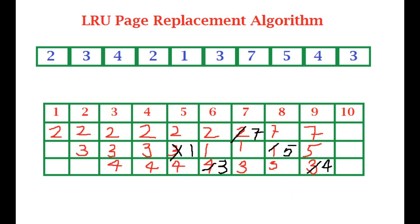In the last iteration, three wants to come in. We have seven, five, and four. Seven is the oldest one, so we remove seven and write three here. Notice that this is pretty similar to FCFS, but the oldest used page is removed rather than the oldest page overall.